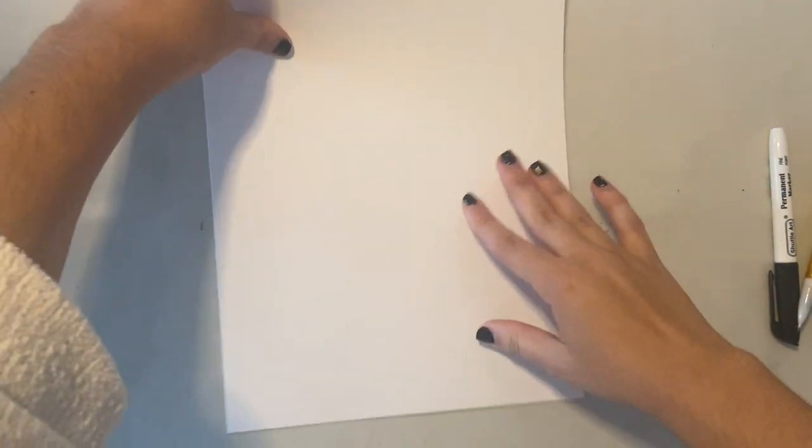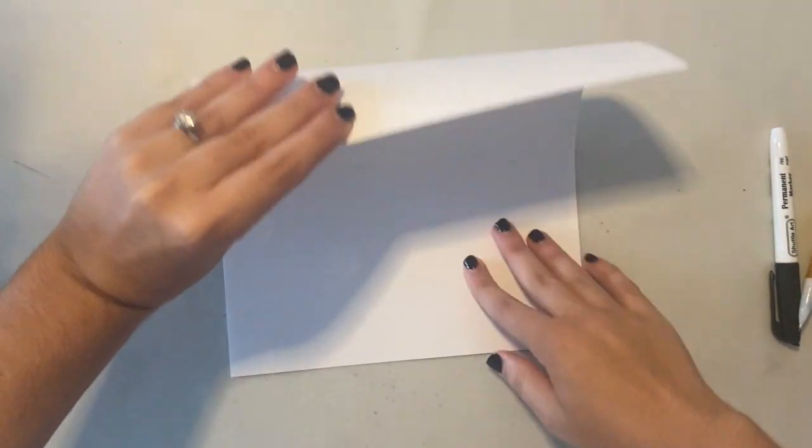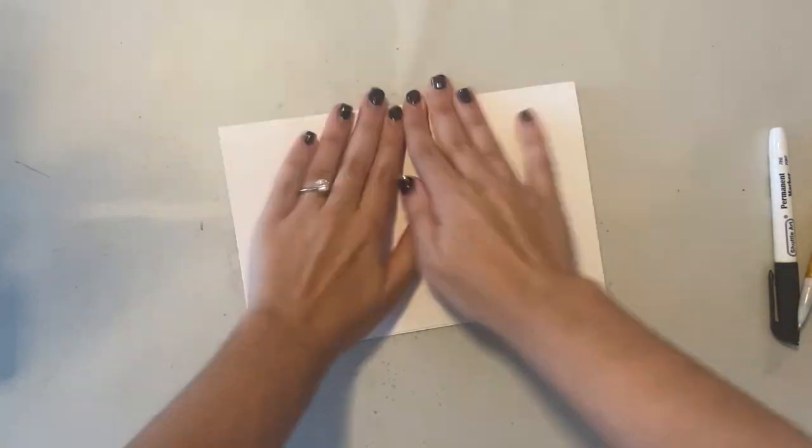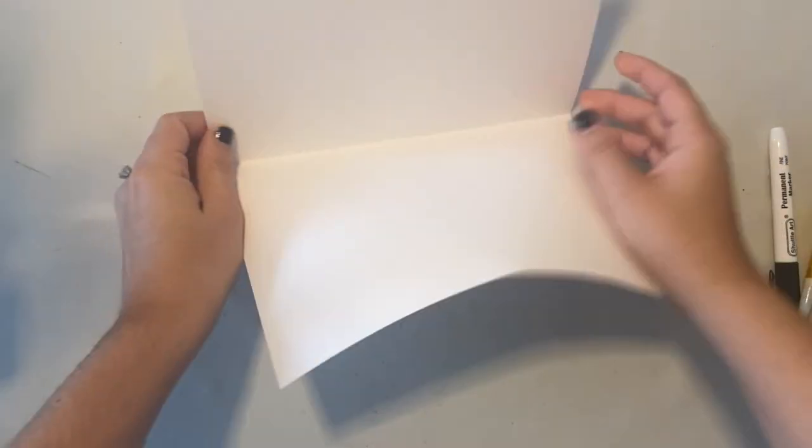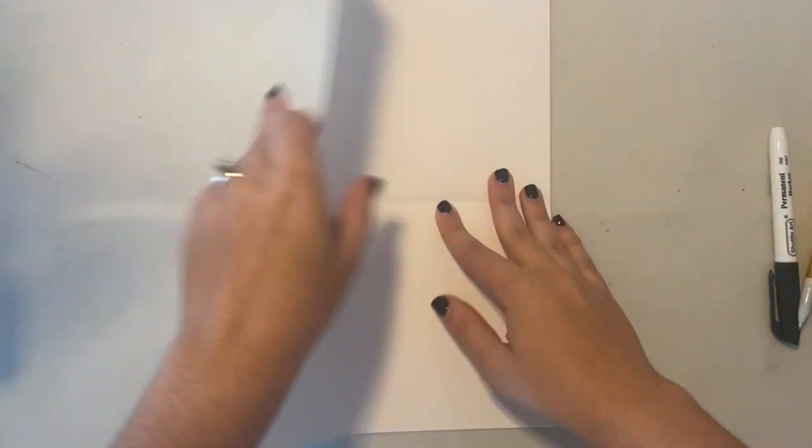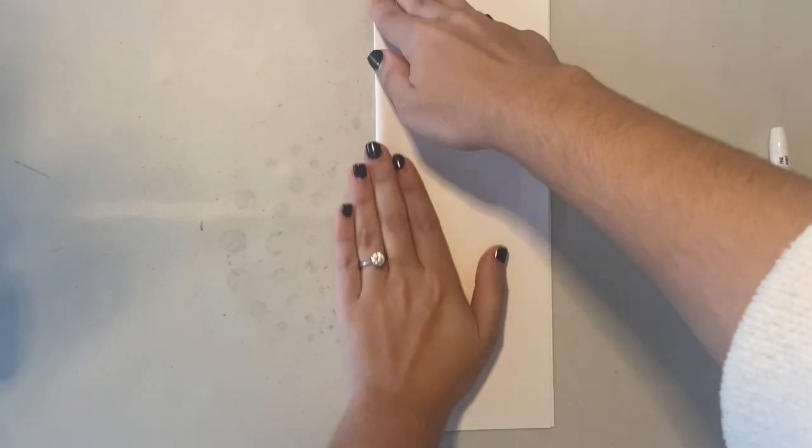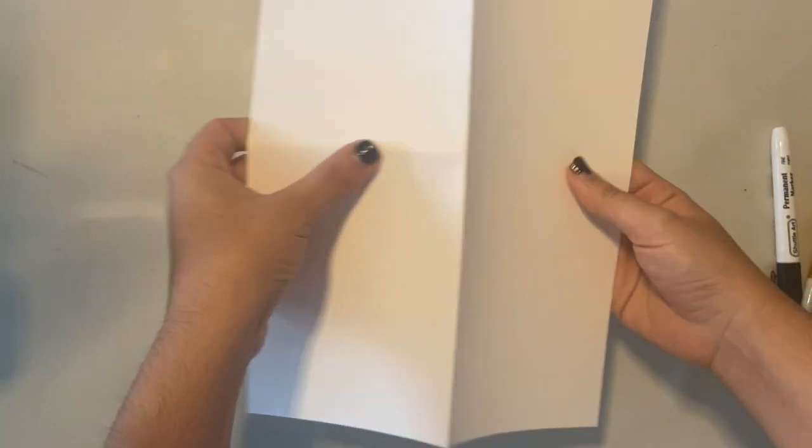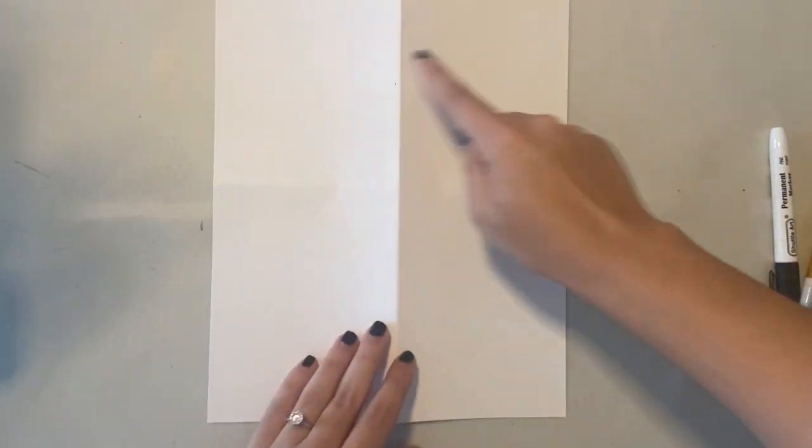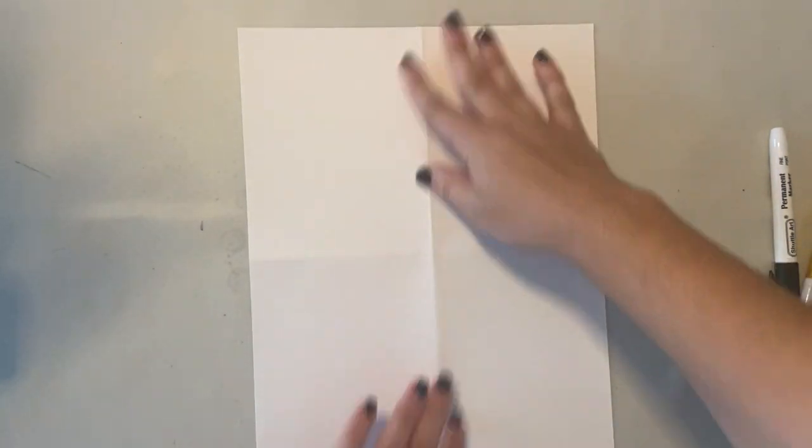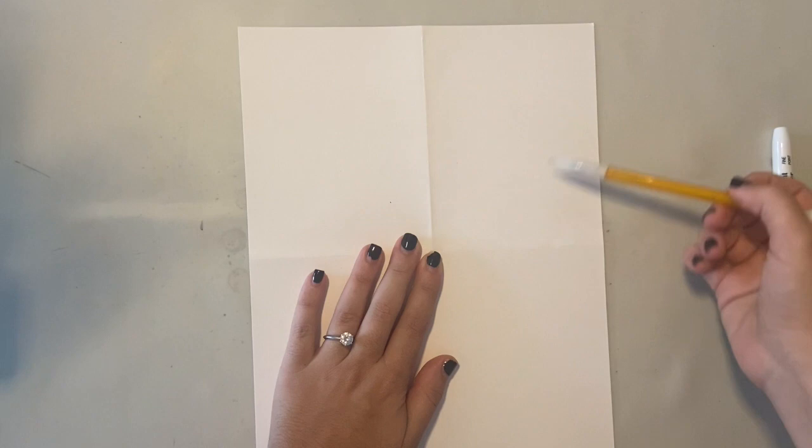You're going to start by taking your paper and folding it so that we have four equal sections. First, fold it in half, hamburger style. Open it back up and then fold it in half the other way. Make sure you crease the edges. And once you open it up, you should have four equal sections. Make sure to press down on your paper to get it nice and flat.